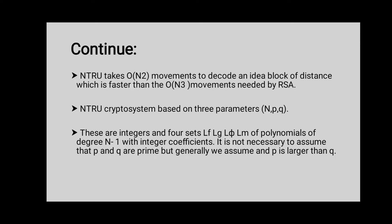In addition, NTRU key lengths are of order N, which compares favorably with the order N² key lengths needed by RSA. The NTRU cryptosystem is based on three parameters which are integers N, P, and Q, and four sets LF, LG, L5, and LM of polynomials of degree N-1 with integer coefficients.